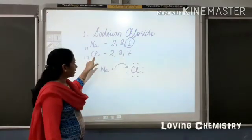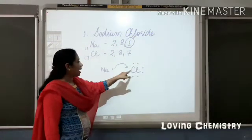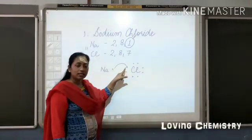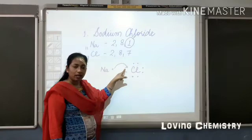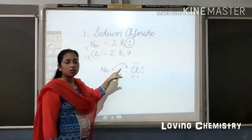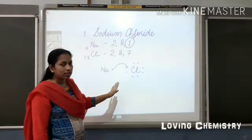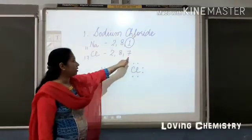Chlorine at the same time had seven electrons of its own and now it has accepted one from sodium. And the 7 plus 1 becomes 8. An octet for chlorine in the third shell.